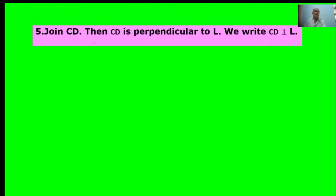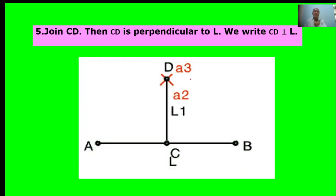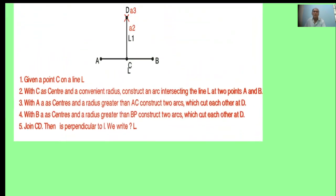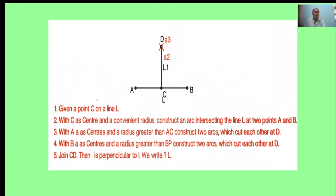Join CD. Then CD is perpendicular to L. Here, D is the intersect point. Join CD. CD is perpendicular to L. The perpendicular line construction steps are given. Five steps are there. You observe that.